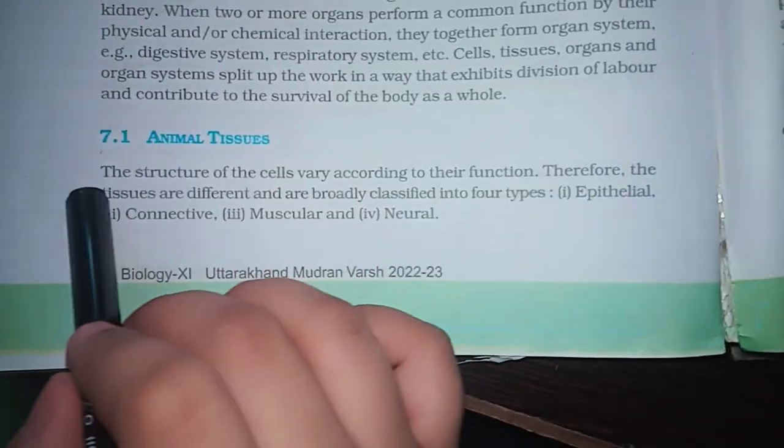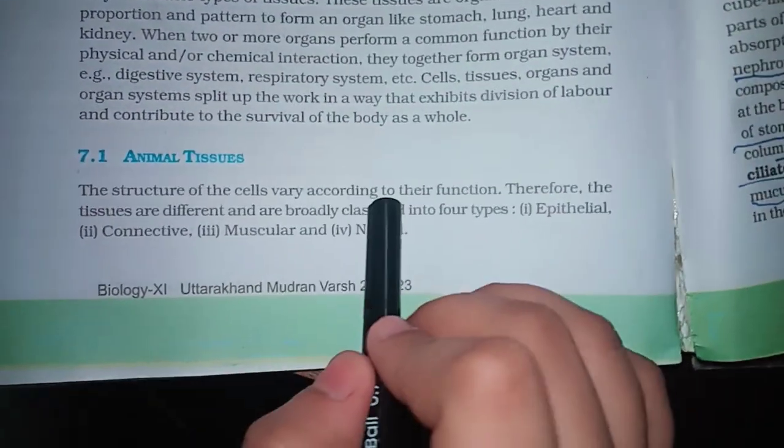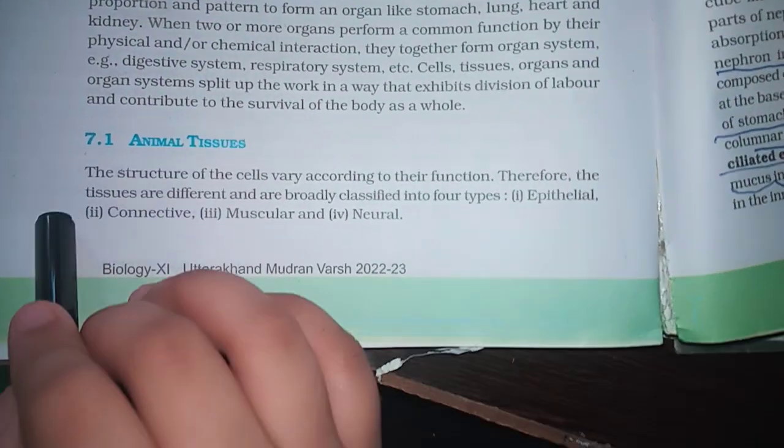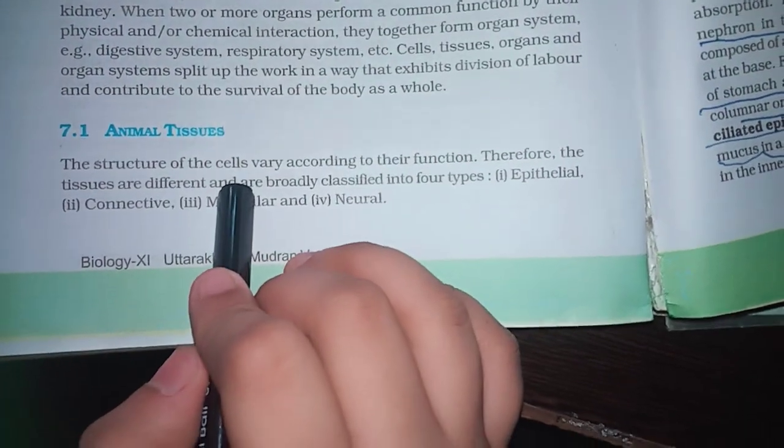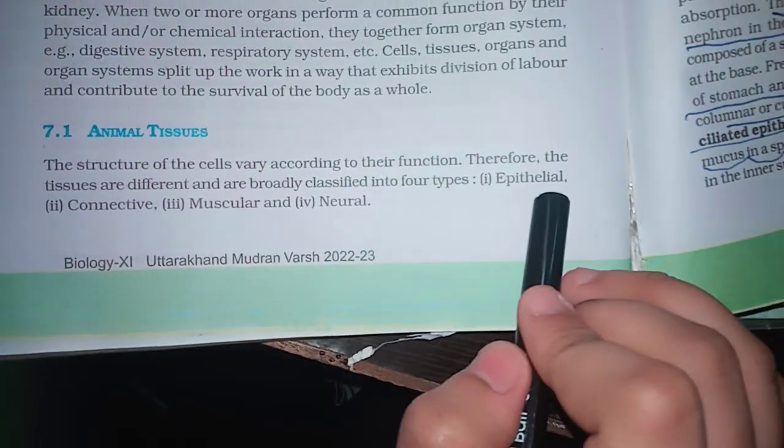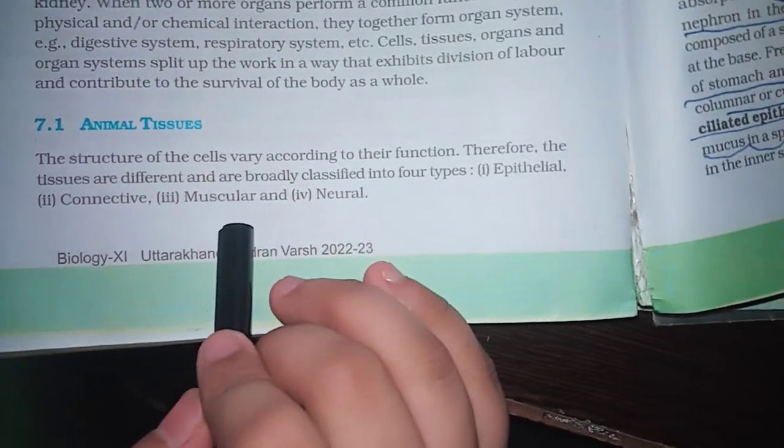Animal tissues. The structure of the cells vary according to their function. Therefore, the tissues are different and are broadly classified into four types: Epithelial, connective, muscular and neural.